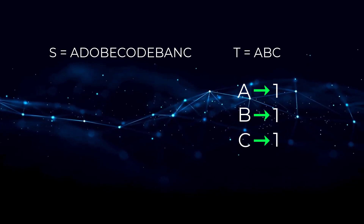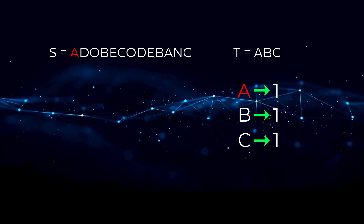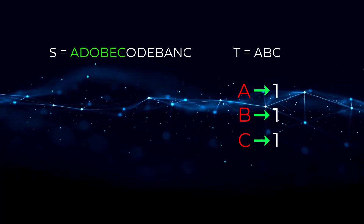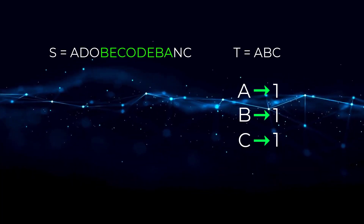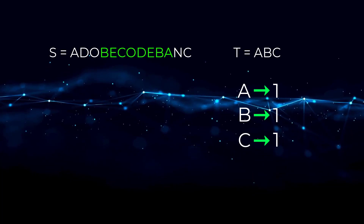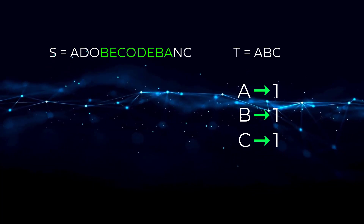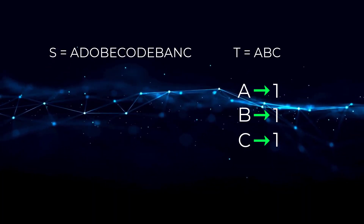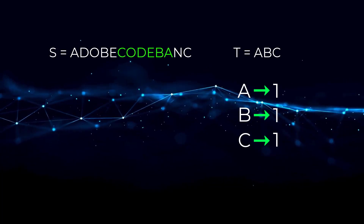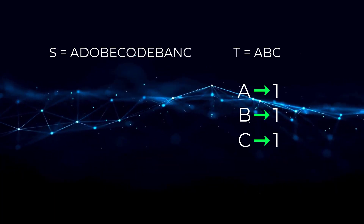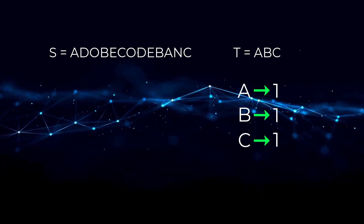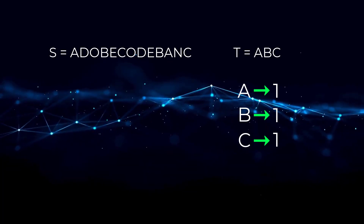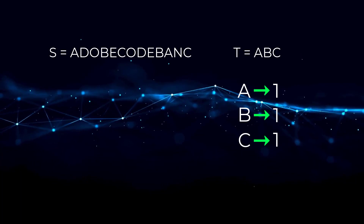Looking at string S, we can see that A, B, and C are in this substring. We actually have two Bs here instead of just one, but that is totally fine — we just need at least one. The characters A, B, and C are also in other substrings, but we are looking for the smallest substring, so let's ignore the others.